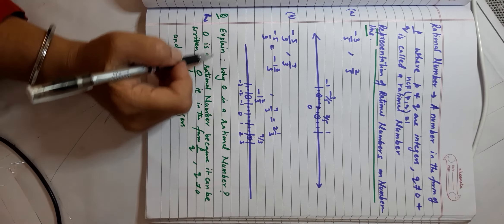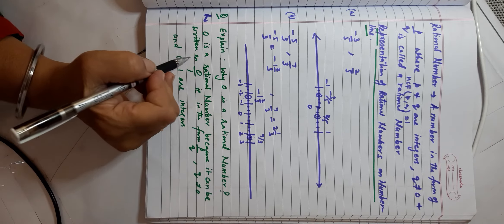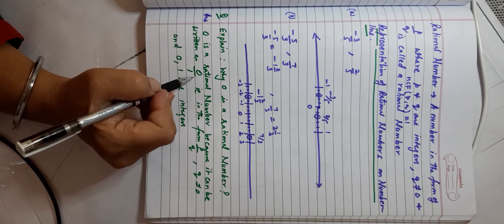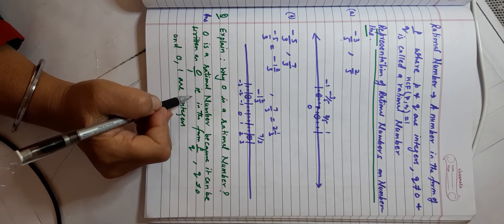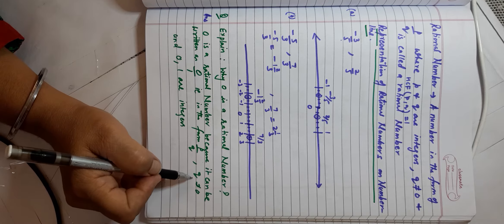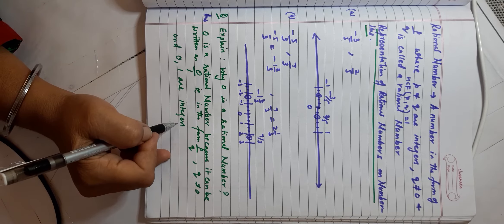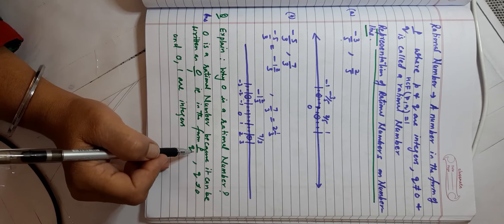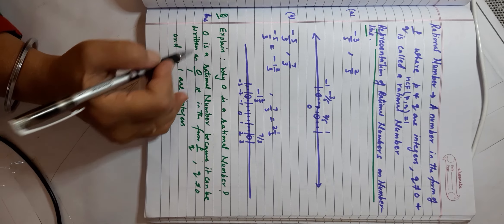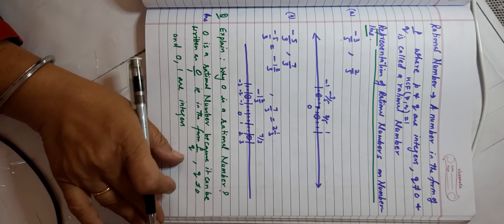Next question: explain why 0 is a rational number. Zero is a rational number because it can be written in the form 0/1, which is the form p/q where q is not equal to 0, and both 0 and 1 are integers. This satisfies the definition of rational numbers. Therefore, 0 is a rational number.